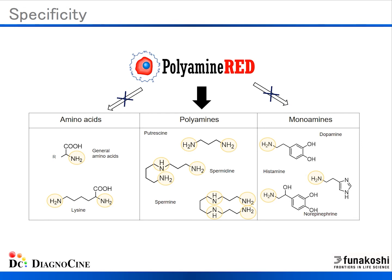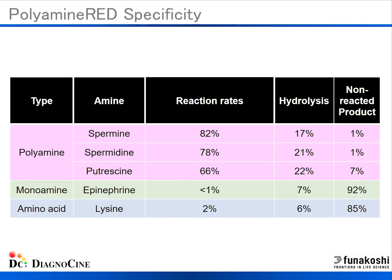Polyamine red has specificity for polyamine species such as putrescine, spermidine, and spermine. On the other hand, polyamine red reacts minimally to amino acids and to monoamines. In this table, we show polyamine red specificity. As you can see in the red-shaded area, polyamine red reacts to polyamine species with high percentage, but has low reaction rates to monoamines and amino acids.